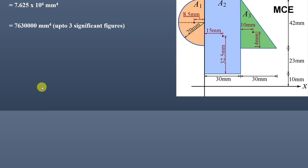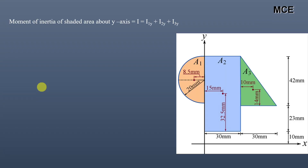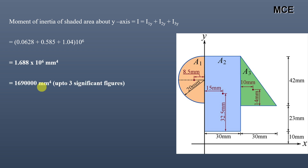Similarly, the moment of inertia of this composite shape about the y-axis is I₁y + I₂y + I₃y = 0.0628 + 0.585 + 1.04 = 1.688 × 10⁶ mm⁴, or approximately 16,900 mm⁴ written to three significant figures.